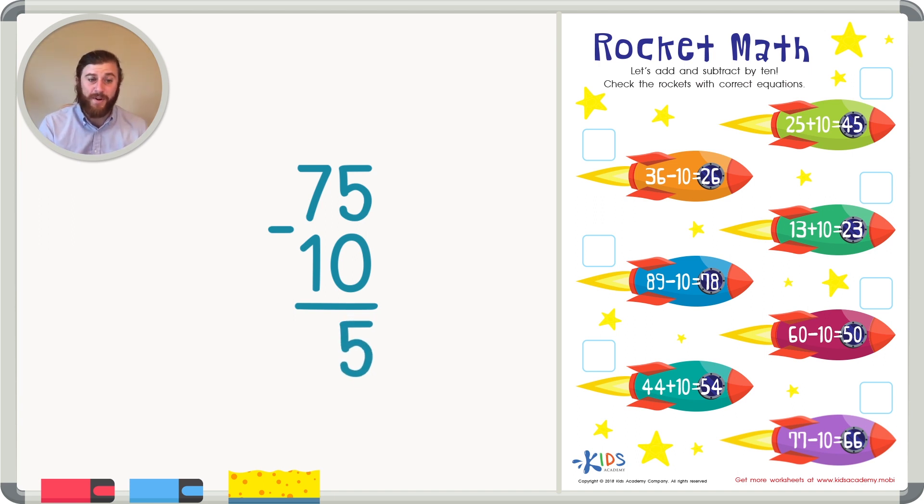So 5 minus 0 is just 5. You're taking nothing away. So whenever you subtract 0 from a number, you're taking away nothing. So the number stays the same. If you're taking away 1 from a number, it's just becoming 1 less. 7 minus 1 is just 6 because 6 comes right before 7.